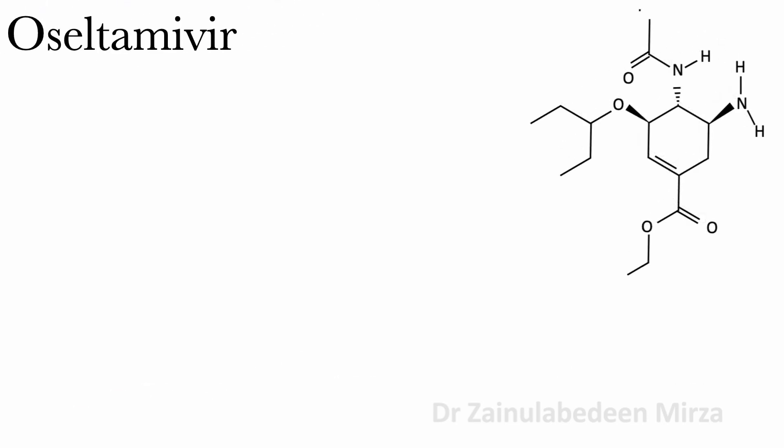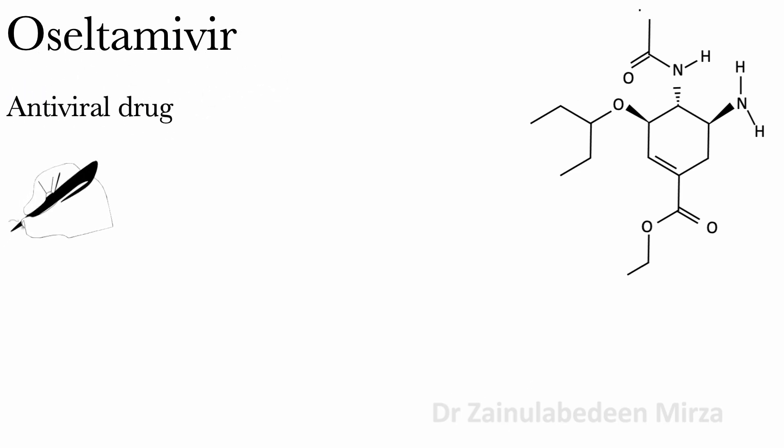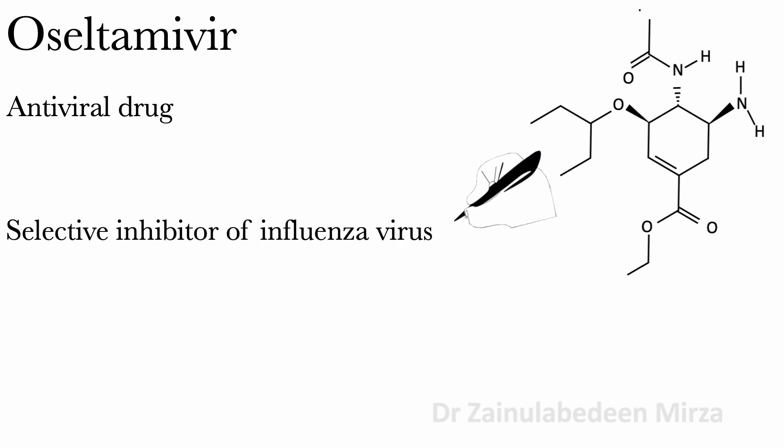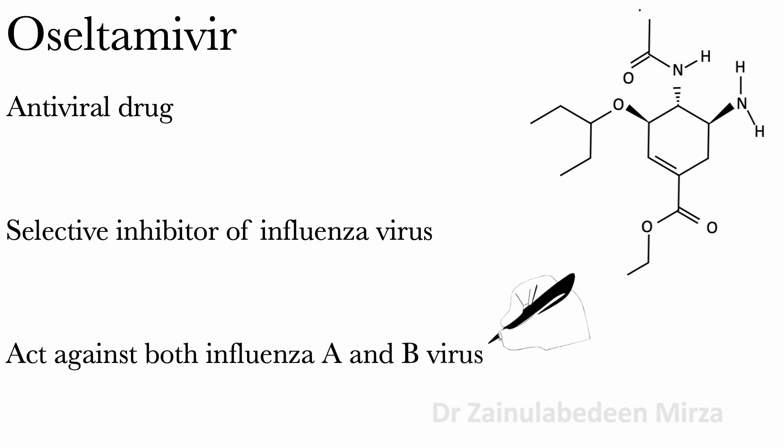Oseltamivir is an antiviral drug and it is a selective inhibitor of influenza virus neuraminidase, an enzyme essential for viral replication. Oseltamivir acts against both influenza A and B viruses, and it suppresses the spread of infection within the respiratory system.